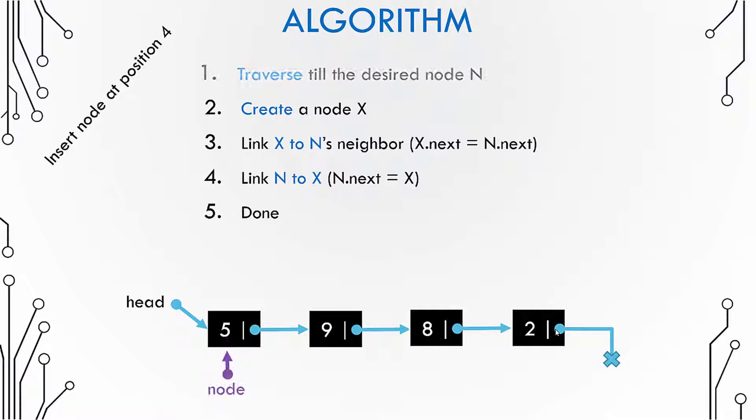So the first step is to traverse to the desired node. In this case it would be 8 because you need to go to a node after which the new node is to be added. So since it is specified that the new node should be put at position number 4 it means that it should come after this node 8.